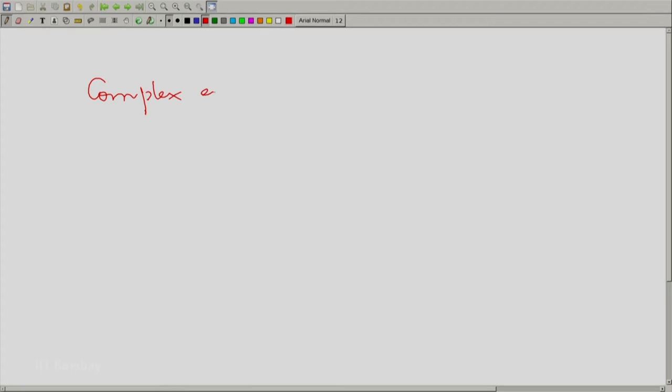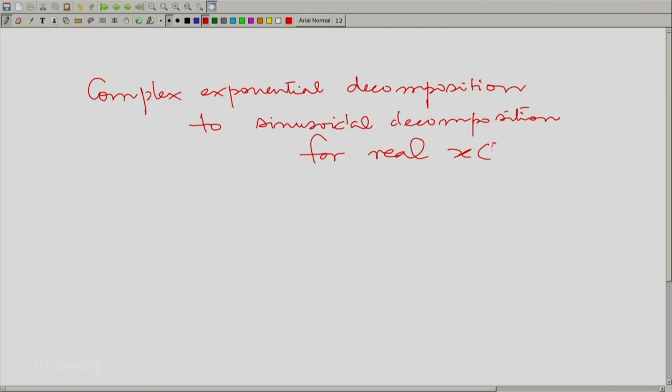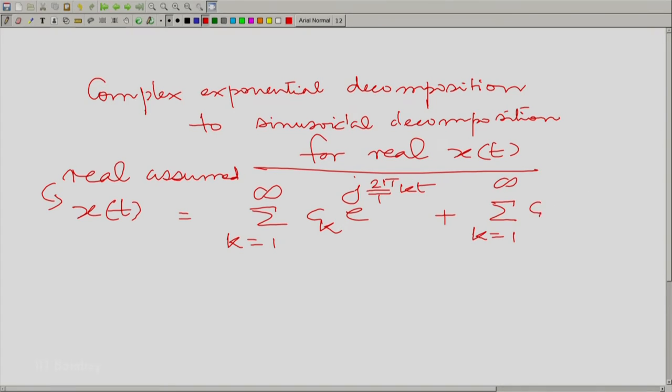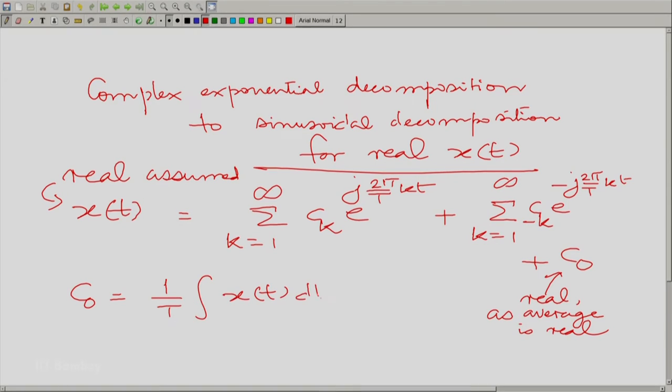Now, how do we go from the complex exponential decomposition back to the sinusoidal decomposition? Complex exponential decomposition to the sinusoidal decomposition for real x(t), very easy. Write x(t), you have assumed it to be real of course, in the form summation k going from 1 to infinity, c_k e raise to the power j 2 pi by T. Same summation, but with minus k instead of k and c_0. And c_0 has to be real as average is real. You know how to calculate c_0. C_0 is essentially 1 by T integrate x(t) dt over an interval of T.